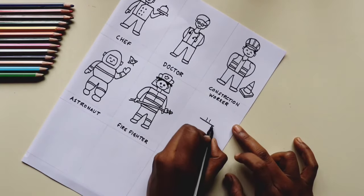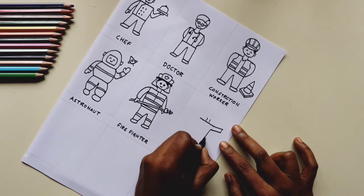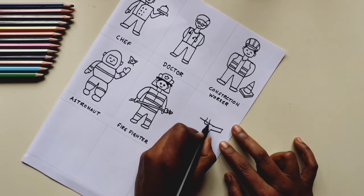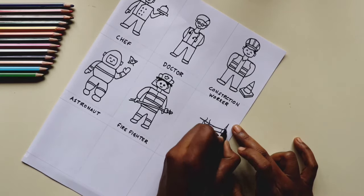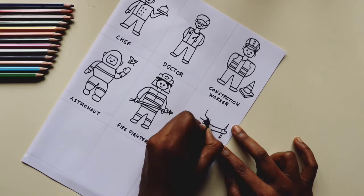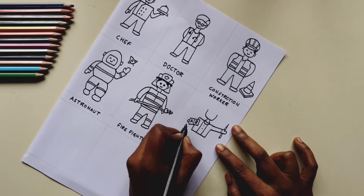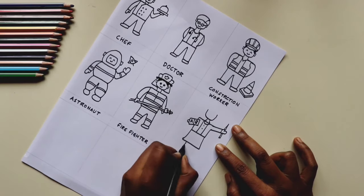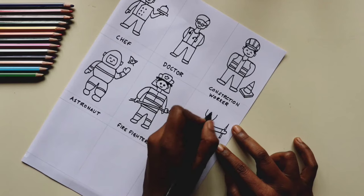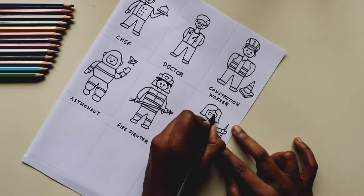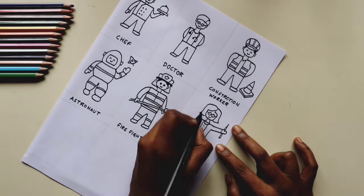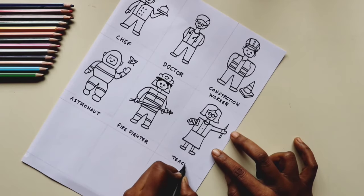Now let's draw a teacher. I'm going to give the teacher a stick in a hand and a book in the other one. If you see, it's all quite easy. It's just the basic structure with some extra details based on what we are drawing. Here I'm just adding again the glasses.